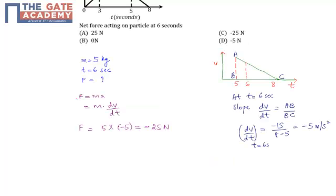Now we know that force is equal to mass into acceleration where acceleration is dv by dt. We have the v and t graph, so we can find the slope which is dv by dt at time t is equal to 6 seconds.